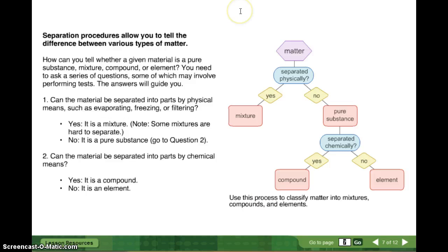Separation procedures allow you to tell the difference between various types of matter. How can you tell whether a given material is a pure substance, mixture, compound, or element? You need to ask a series of questions, some of which may involve performing tests. The answers will guide you. Can the material be separated into parts by physical means, such as evaporating, freezing, or filtering? If it can, if you can separate it physically, then it's a mixture. Now, some mixtures are harder to separate than others, but if you can do it by a physical mean, so not a chemical change, but a physical change, then it's a mixture. If you cannot separate it by a physical change, then it's a pure substance. Can you separate it chemically, like when we put the electricity through the water? If you can, then it's a compound. If you cannot, then it's an element.